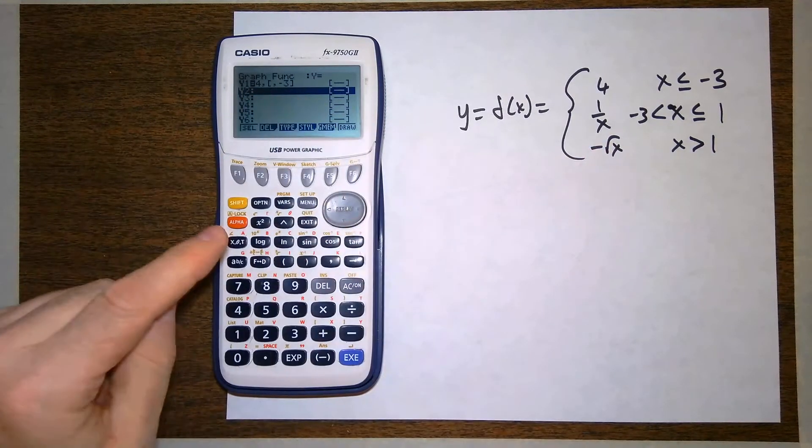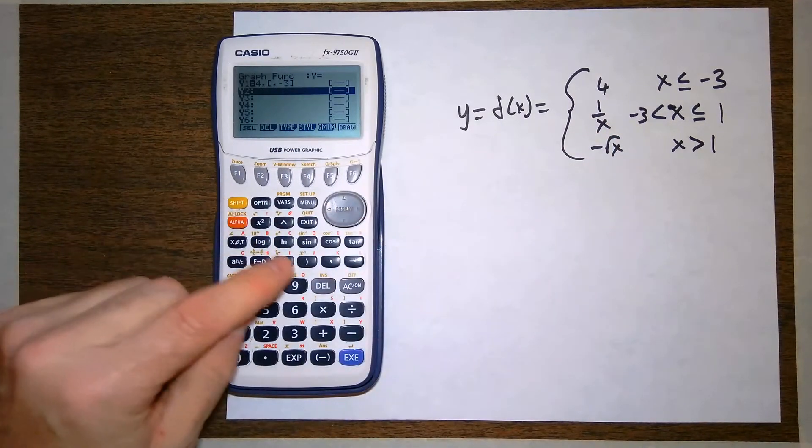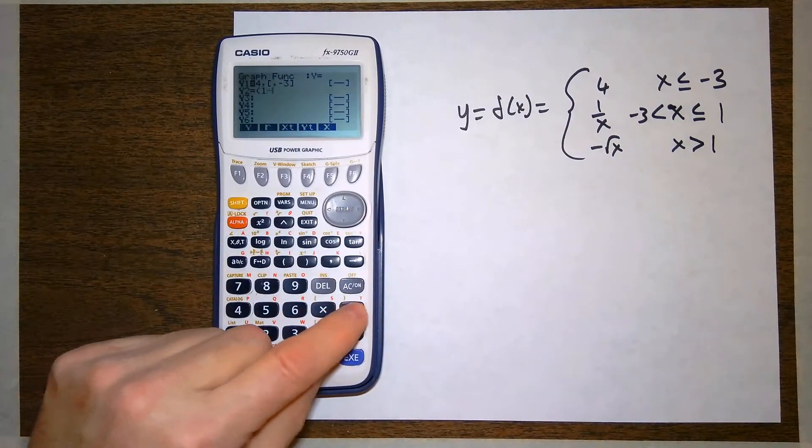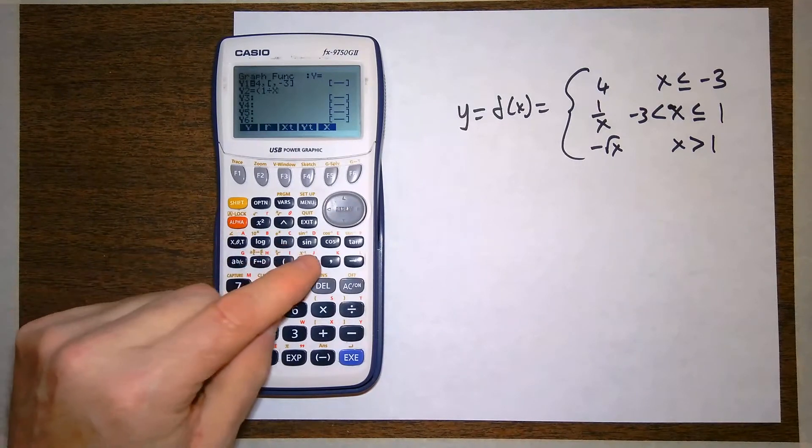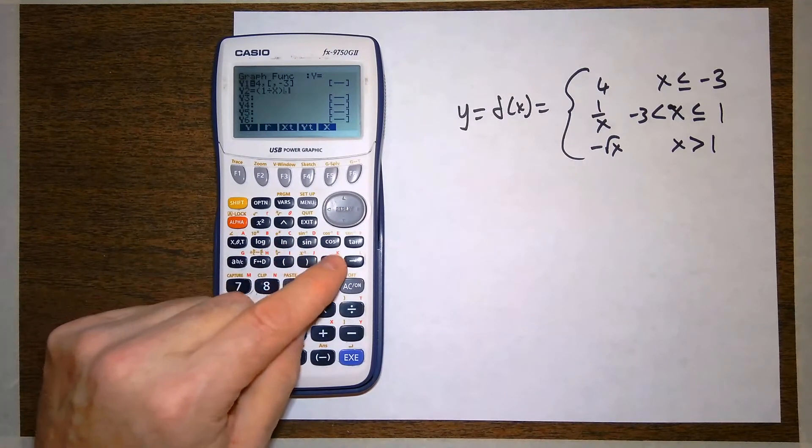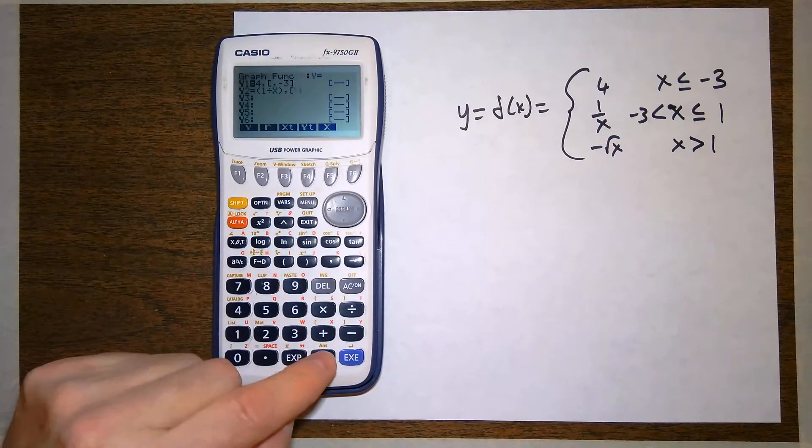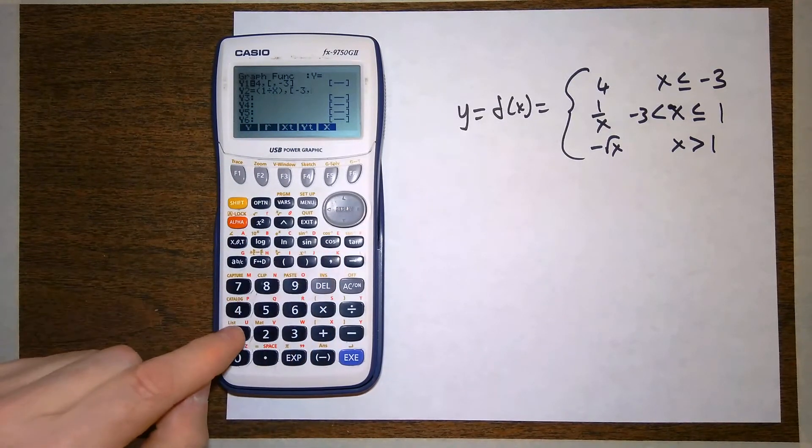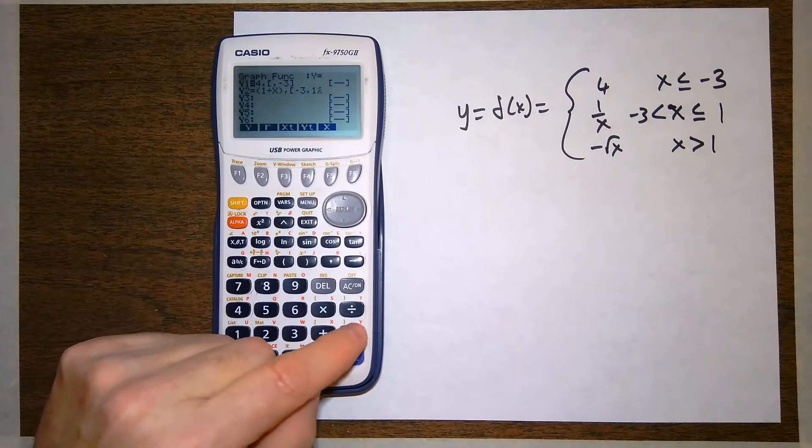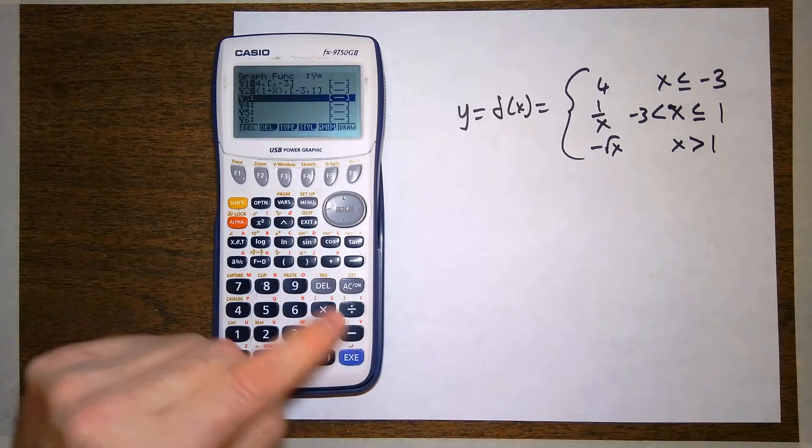And then the second piece is the rational function 1 over x. I'm going to put that in parentheses, open parentheses, 1 divided by x, close parentheses, comma. And I want it in the interval, shift plus, open the interval, from negative 3, comma, to 1. Shift, close bracket, shift minus, close bracket.